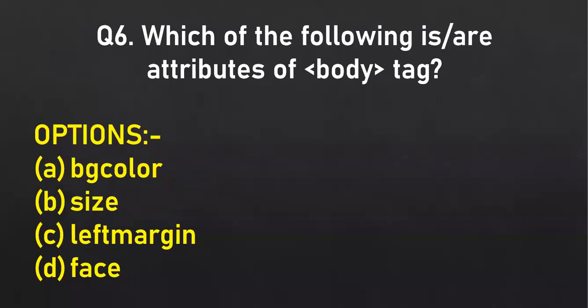Now read carefully — this question is for Harshly: which of the following is or are attributes of the body tag? Note 'is or are' means it can be one or multiple. An online student raised their hand. Yes, Mishti — unmute yourself. The correct answers are option A, bgcolor, and option C, left margin. Both bgcolor and left margin are attributes of the body tag.